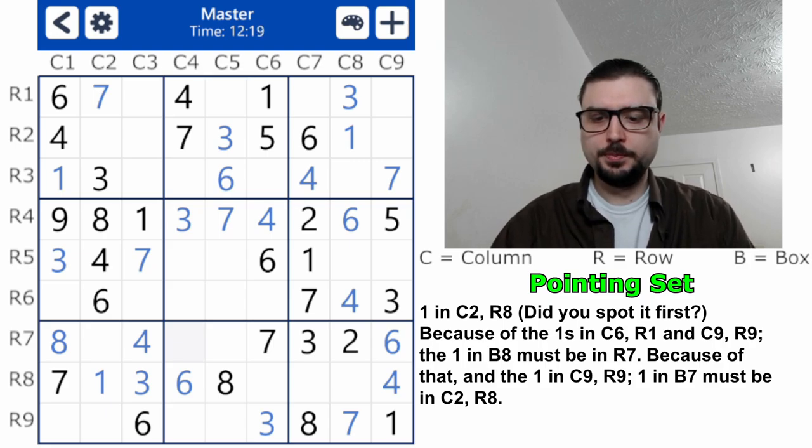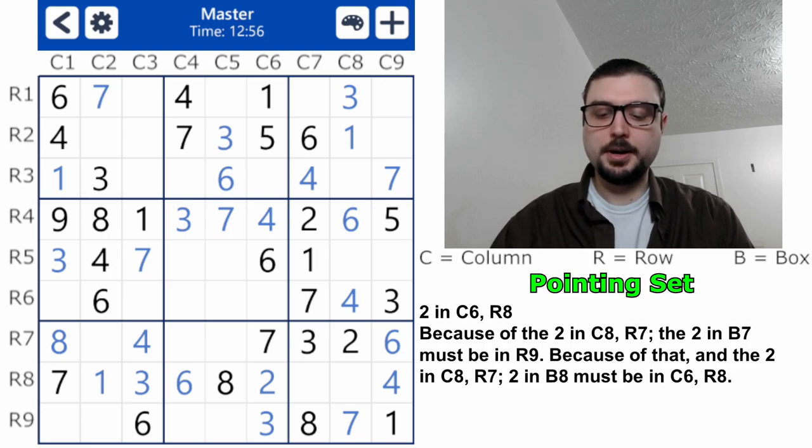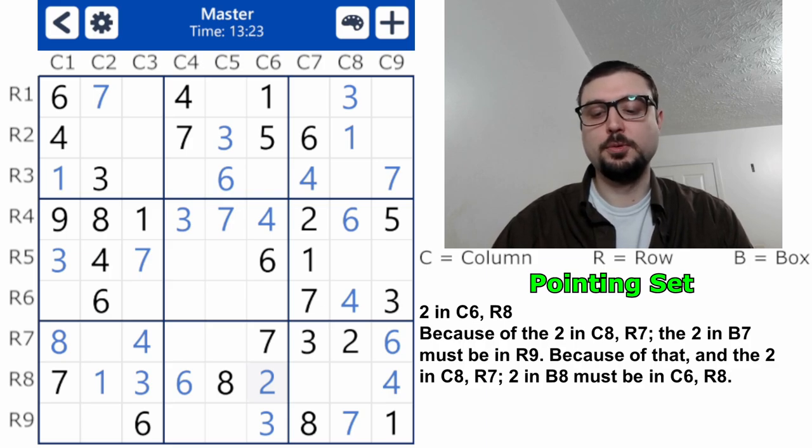Row two is a two, eight, nine. I guess I could give the example of one. One was bug. One must be here or here because of this one and this one. And it also must be here or here because of this one and this one. So that is a bivalue universal grave, a temporary one because that will be resolved eventually.